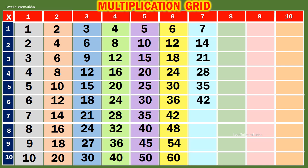7 6s are 42. 7 7s are 49. 7 8s are 56. 7 9s are 63. 7 10s are 70.